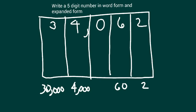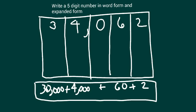We have written the value of each of those digits right below that place value chart. We have this number broken down into its values of thirty thousand, four thousand, sixty, and two. This is what will make up our expanded form: thirty thousand plus four thousand plus sixty plus two.